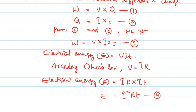Thus, the electrical energy associated with an electric current can be given as: electrical energy E = I²Rt.